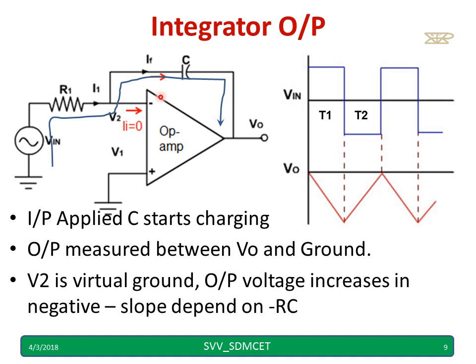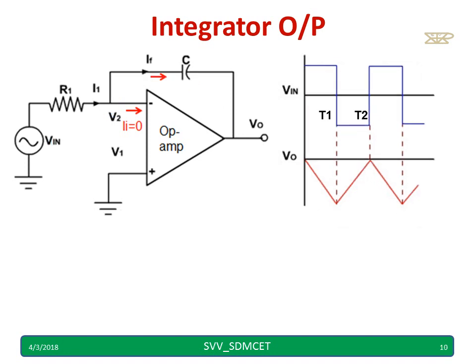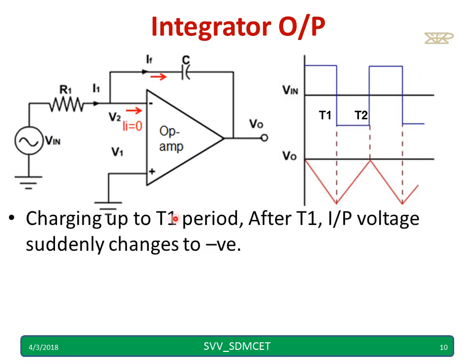Hence the output voltage increases in the negative because this becomes negative, this becomes positive and the slope depends on RC time constant. This is positive, this is negative. And charging up to T1 period. Let us consider this is high up to T1 time period.